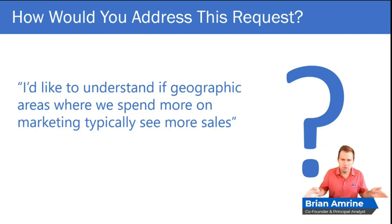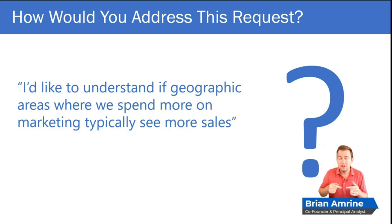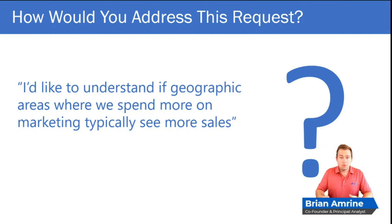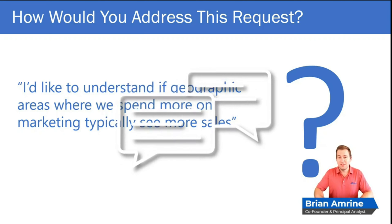You'd compare the change in marketing spend for that area in that year against the change in sales in that geography in that year — seeing if an increase in marketing spend in a particular area in a particular year is typically correlated with higher sales in that same geography and year. So a change approach is another way you could do that. There are lots of ways to approach this — leave a comment if you have thoughts on how you might tackle it.